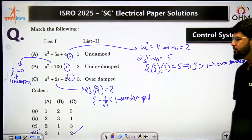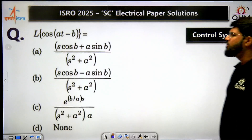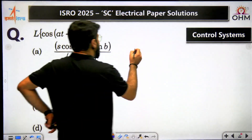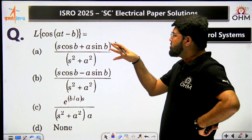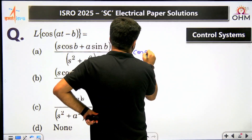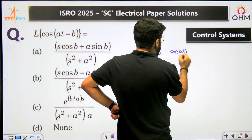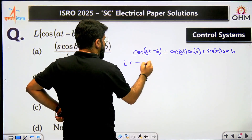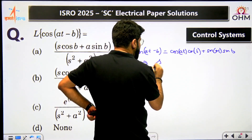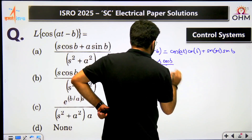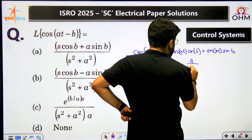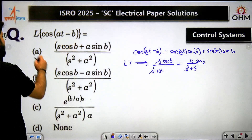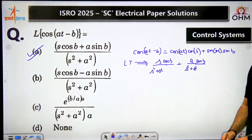Next question: Laplace transform of cos(at minus b). Expand using the cosine difference identity: cos(at minus b) equals cos(at)cos(b) plus sin(at)sin(b). Taking the Laplace transform: cos(b) is a constant, so Laplace of cos(at) gives s upon (s squared plus a squared) multiplied by cos(b), plus sin(b) multiplied by Laplace of sin(at) which is a upon (s squared plus a squared). The result is (s*cos(b) plus a*sin(b)) upon (s squared plus a squared). Answer: option A.